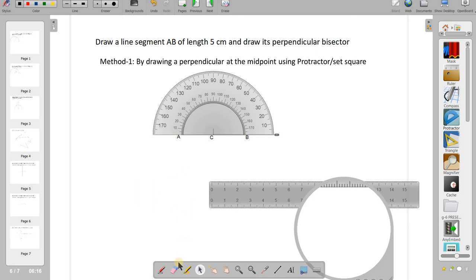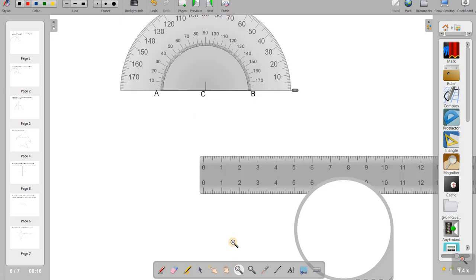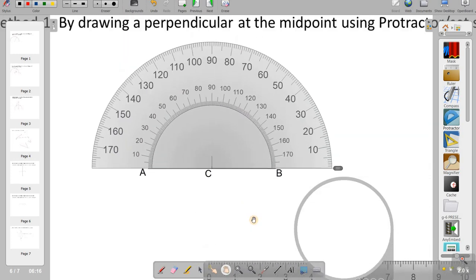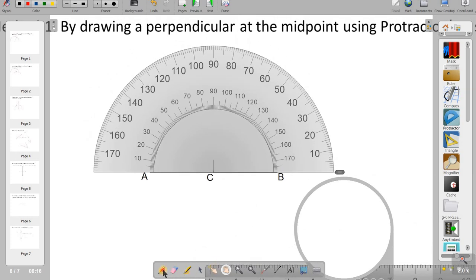So, now, I'll just mark with the pencil. The 90 degree line. I'm taking this one and I'll take a red color. So, it will seem clearly. I'll zoom it and show it to you. It will be visible to us. I'm going to make a mark here.